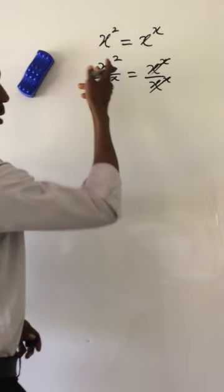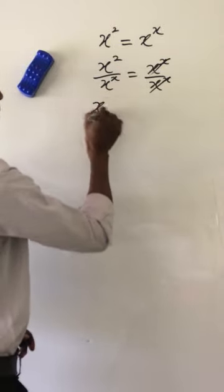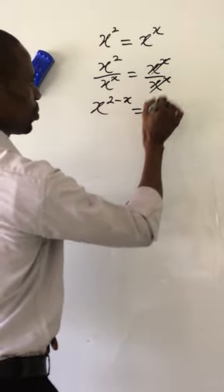We get x to the power of 2 minus x. Apply the law of indices. We have x to the power of minus x equal to 1.